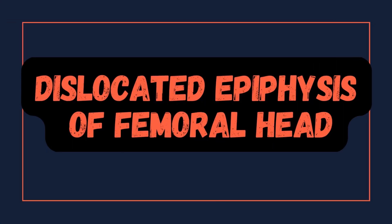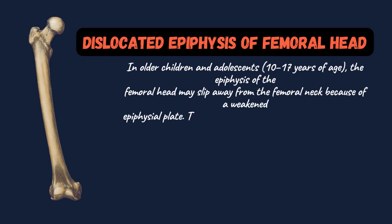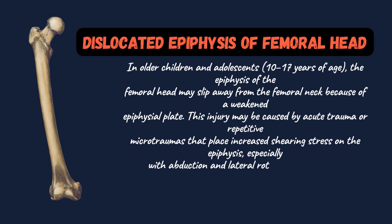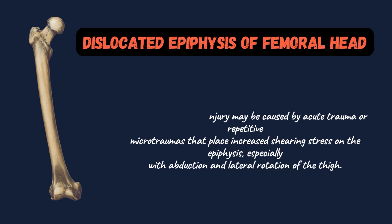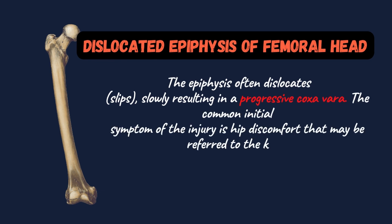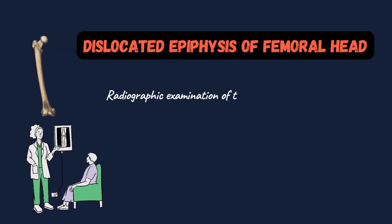Next we will discuss dislocated epiphysis of the femoral head. In older children and adolescents aged 10 to 17 years, the epiphysis of the femoral head may slip away from the femoral neck due to a weakened epiphyseal plate. This injury may be caused by acute trauma or repetitive microtraumas that place increased shearing stress on the epiphysis, especially with abduction and lateral rotation of the thigh. The epiphysis often dislocates slowly, resulting in a progressive coxa vara.